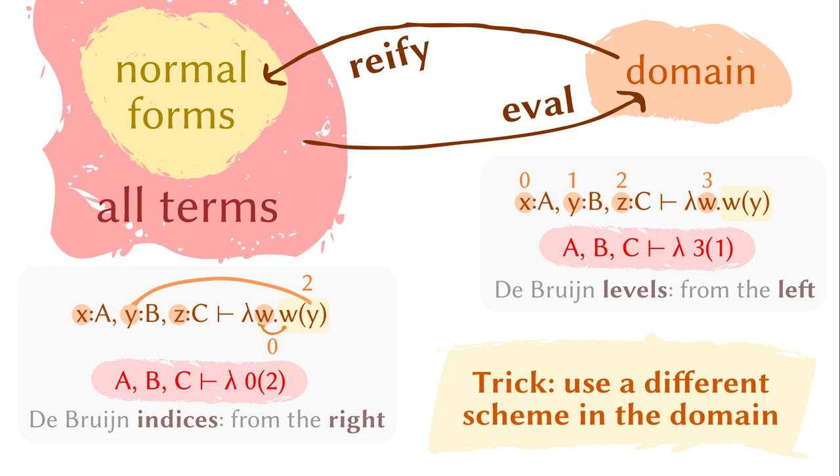Alright, so this seems to be working for simply-typed lambda calculus, and we can apply various optimizations. But how about the cubical type theory?